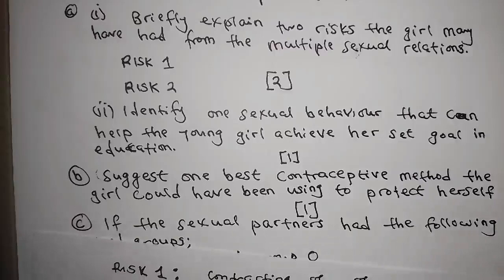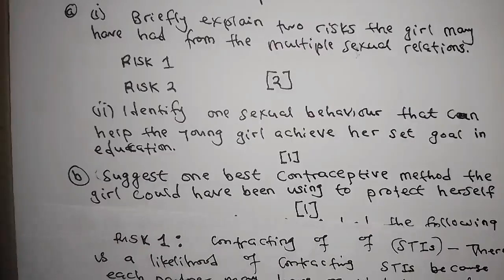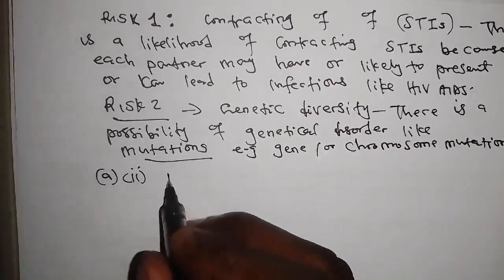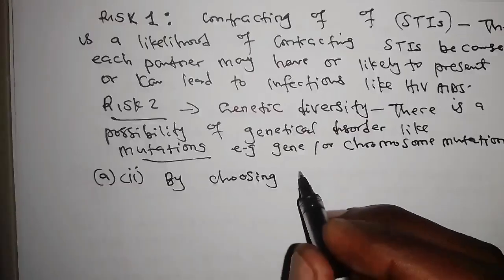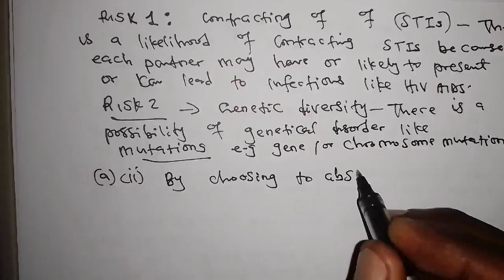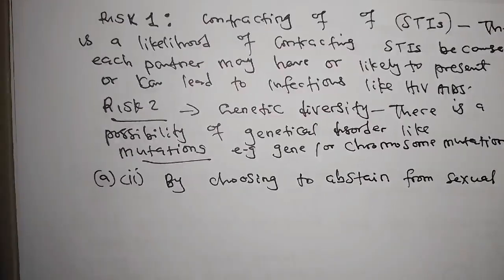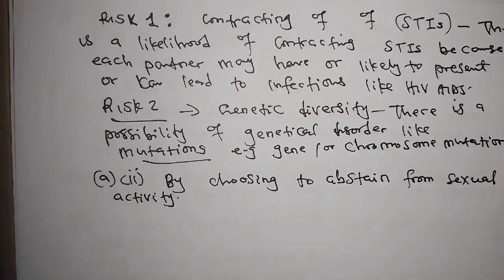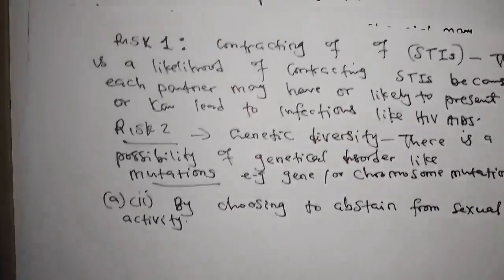Roman numeral two on A says: identify one sexual behavior that can help the young girl achieve her goals in education. For this one you can say: by choosing to abstain from sexual activity. This will allow the girl to focus on her education, saving time and energy.